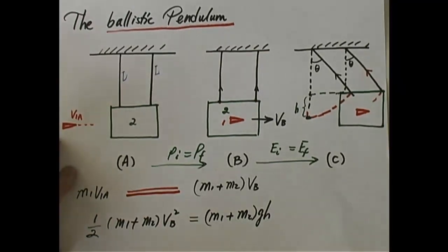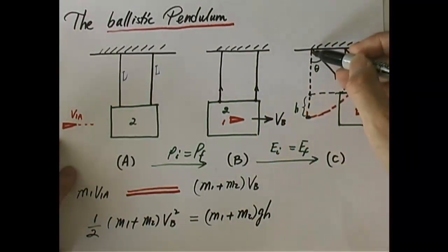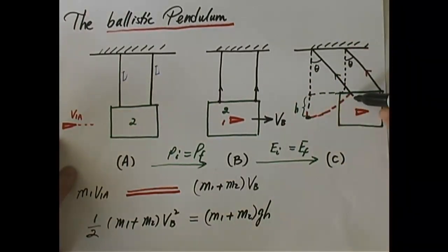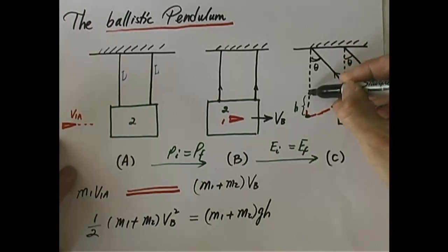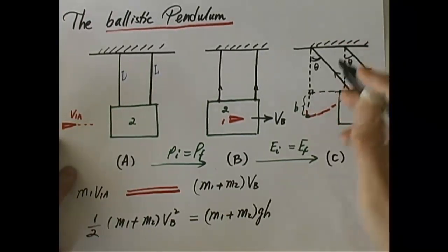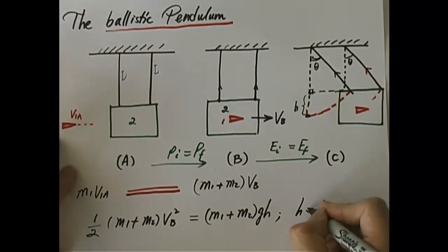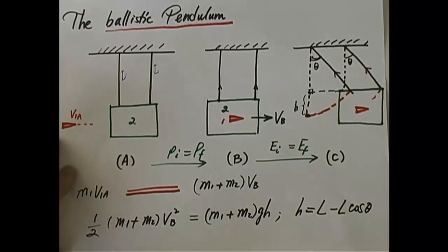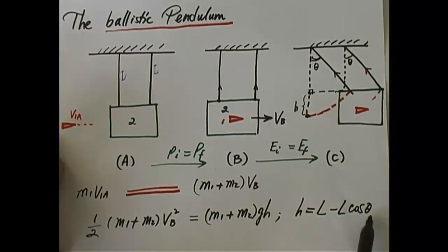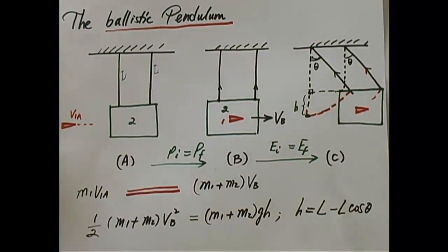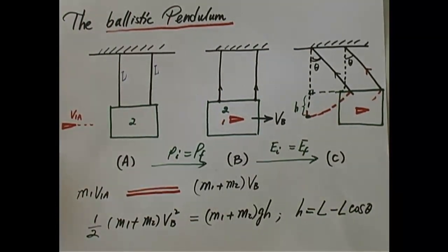What is H? The string length is L, so both attachment points are at distance L. The vertical distance from the pivot to the object's final position is L·cos(θ). So H = L − L·cos(θ). Plugging that in, the first equation gives VB in terms of V1A, and you substitute VB into the energy equation. Since you know θ and L, you get an equation with only one unknown: V1A, the initial speed of the bullet. Solving that gives you the initial speed of the bullet — that's how the ballistic pendulum works.